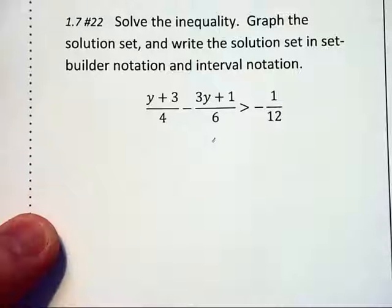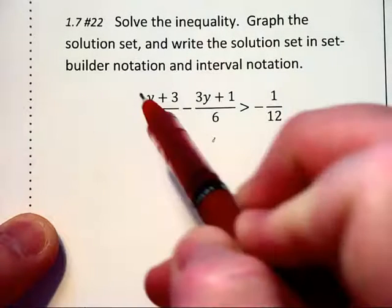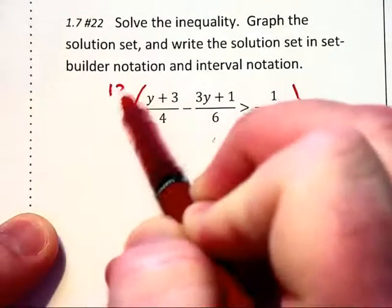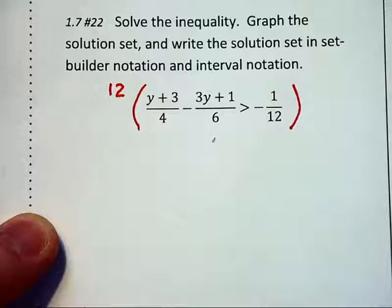In this example, we have fractions, and so we are going to multiply through by the least common denominator of 12 to clear the fractions right off the bat.